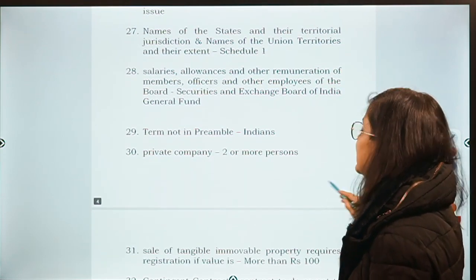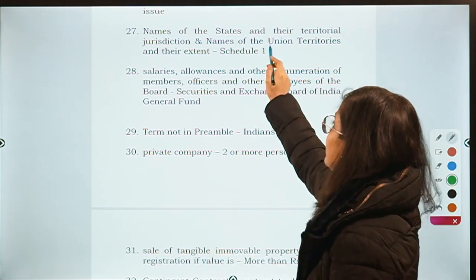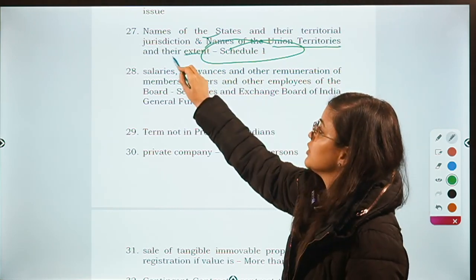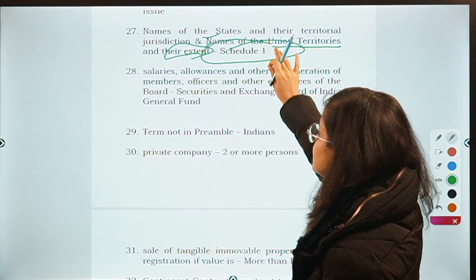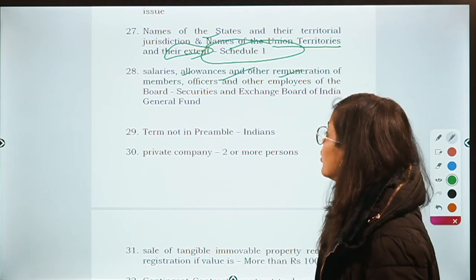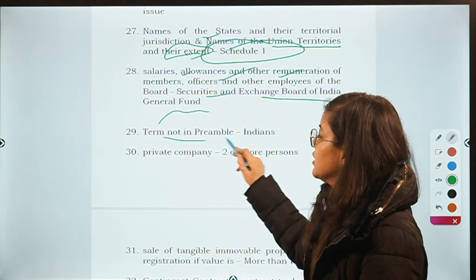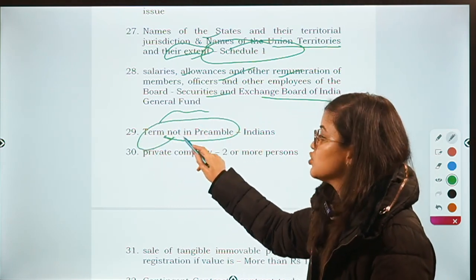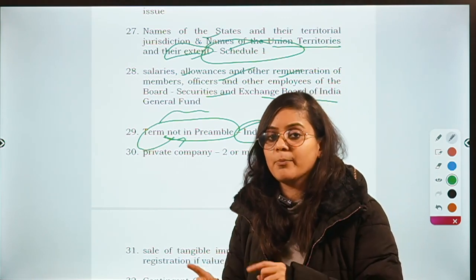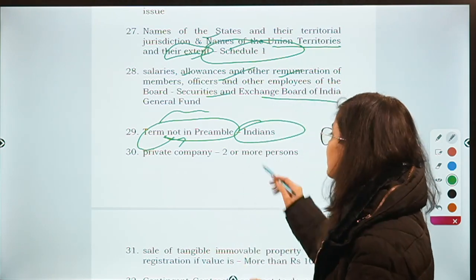Next: schedules of the Constitution — names of states, territories and the extent of union territories are prescribed under Schedule 1 of the Constitution. Then: salaries, allowances and remuneration of employees of SEBI are paid out of the Securities and Exchange Board of India General Fund. There was also a negative question: which of the following terms is not in the Preamble? The answer was 'Indians' — 'India' is there in 'We the people of India,' but 'Indians' is not.